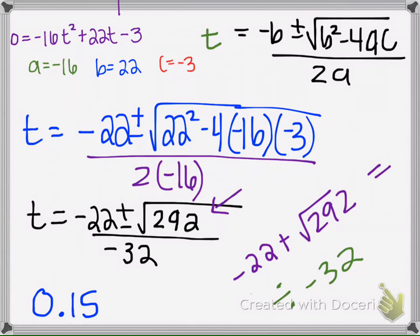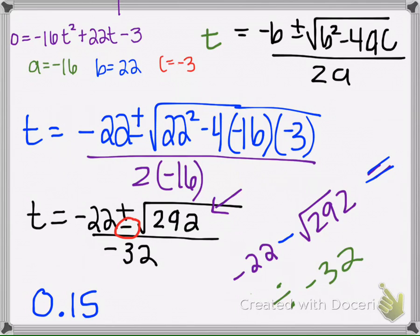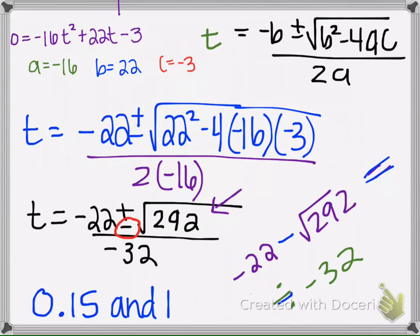Now do that again, but this time use minus instead of plus. Type in your calculator: negative 22, minus the square root of 292, equals, then divide by negative 32. Round your answer to the hundredths and you should get 1.22.